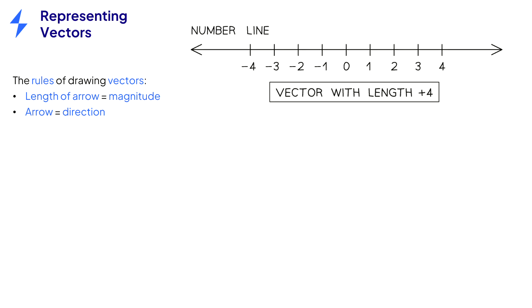For example, we want to draw a vector of length 4 in the positive direction. This is shown correctly here. This arrow, however, is the correct length but facing in the wrong direction to represent the vector correctly. Always draw your vector arrows coming out of the object, not going into it.